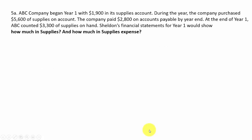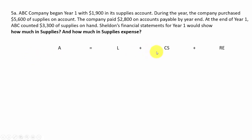Next question: they want to know how much in supplies and how much in supplies expense we're going to have. ABC company began year one with $1,900 in supplies. During the year the company purchased $5,600 worth of supplies on account — supplies under assets goes up $5,600 and liabilities go up $5,600 because we bought on accounts payable.